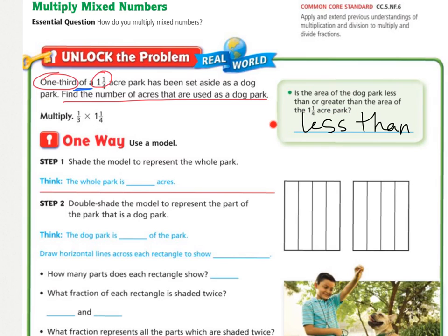Plus, we're finding a fraction of the whole number, the mixed number. So one way to do this is to use a model.